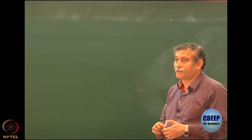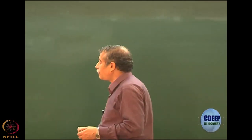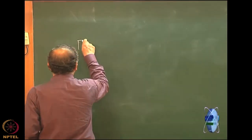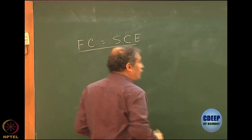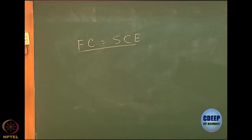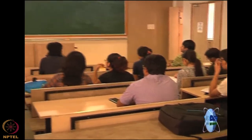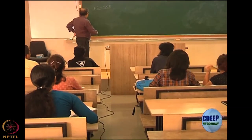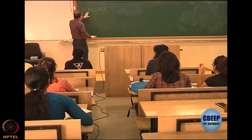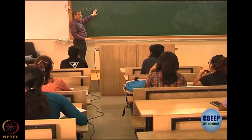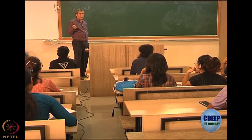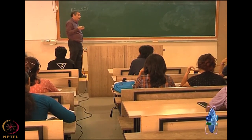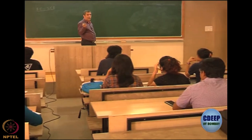We come back to the problem of Hartree-Fock. We had derived the Hartree-Fock-Roothaan equation as FC equal to SCE. I hope all of you have done the exercise of checking that you have to write it in the manner SCE and cannot write it any other way. We also wrote F in terms of the coefficients. Remember that now everything — the input matrices — are all in terms of atomic orbitals. If I have integrals in terms of atomic orbitals, I can construct F. However, F will depend on the coefficients, or what we call the charge density bond order matrix, which is actually related to the coefficients.